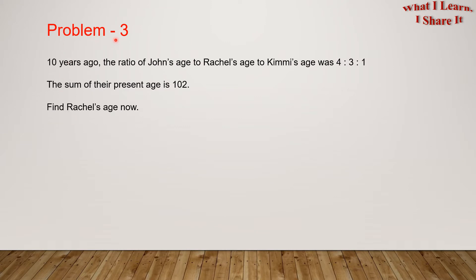Problem 3. Ten years ago, the ratio of John's age to Rachel's age to Kimmy's age was 4 to 3 to 1. The sum of their present ages is 102. Find Rachel's age now!